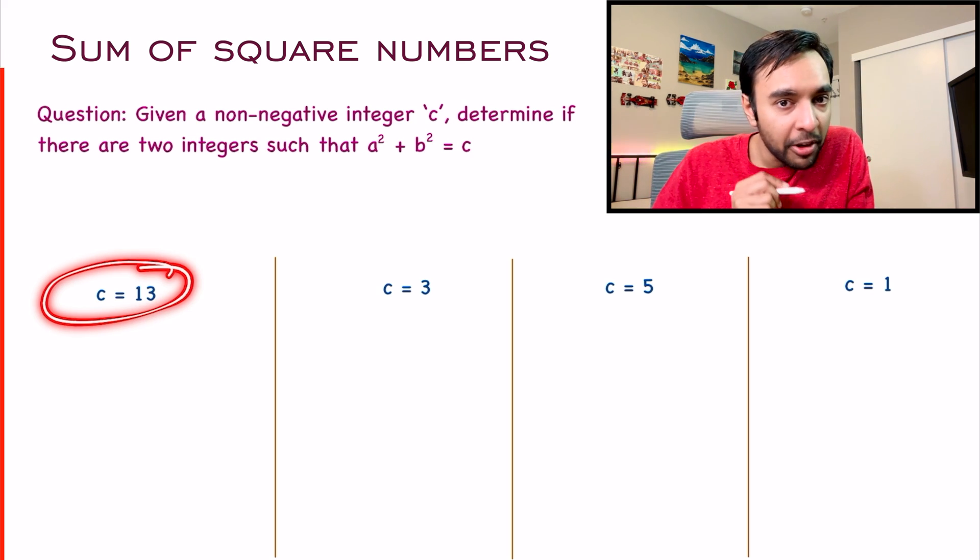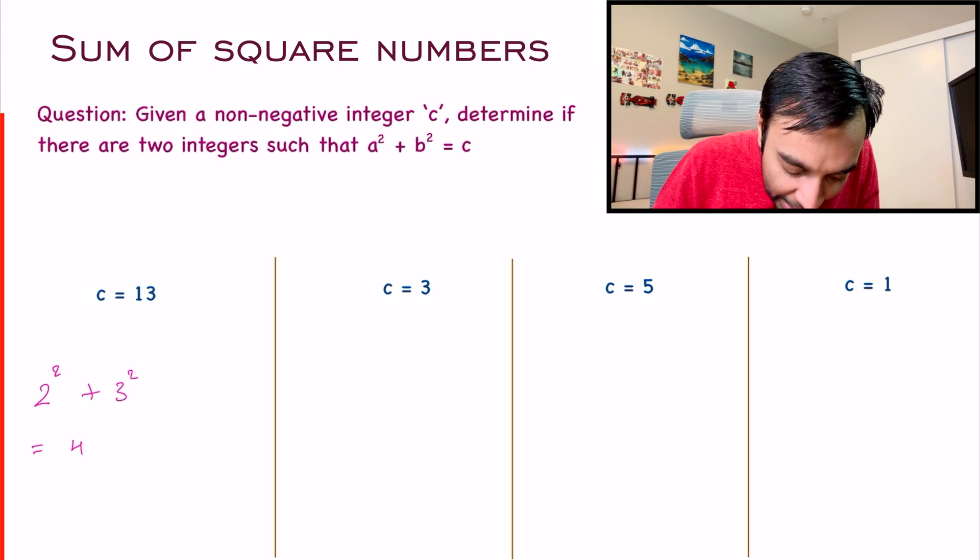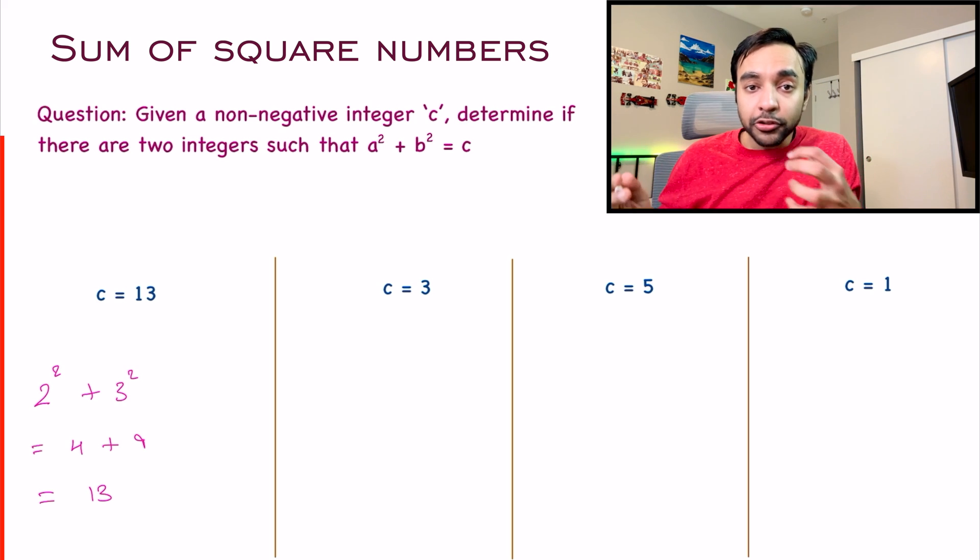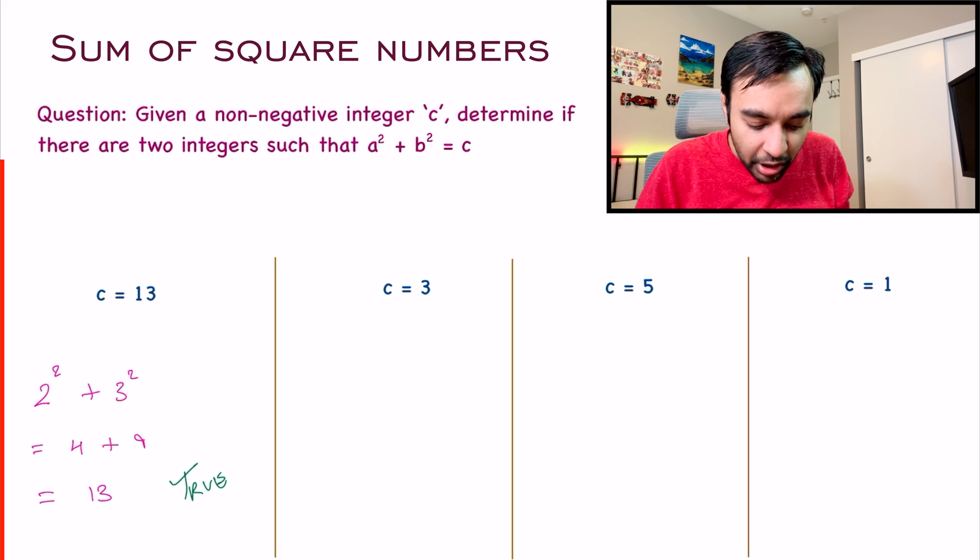For example, if I look at my first test case, the value of c is 13 and I can get this number by 2² + 3². That gives me four and nine and that gives you 13. So you can achieve it, right? So you simply return true as your answer.